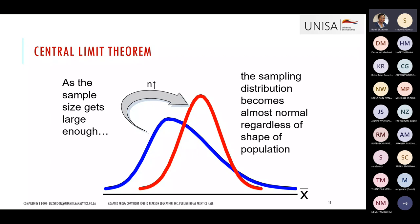We can also apply the central limit theorem: as the sample size gets large enough, the sampling distribution becomes approximately normal regardless of the population's shape. A right-skewed population distribution, as we increase the number of samples drawn, tends toward a normal bell-shaped distribution. The larger the n, the more your distribution becomes normal.